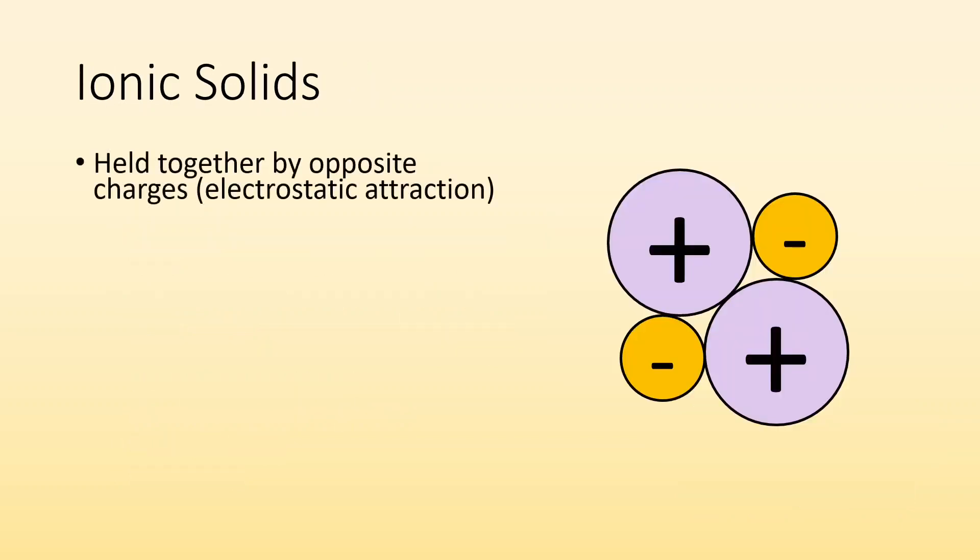They're not brittle. Whereas ionic solids, they're held together because of this electrostatic attraction. We have these differences in charge. So electro means charges. Static means unchanging. So it's saying that this ion always has a positive charge, and this ion has a negative charge always. And we know that opposites attract.